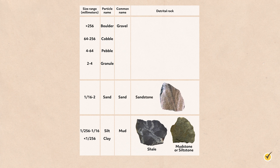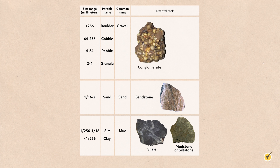Sandstones, which you have probably picked up if you've ever been to a beach, have sand-sized particles that you may be able to see with the naked eye. The third type of sedimentary rock is a conglomerate. Conglomerates are composed of gravel-sized particles that are rounded. If the particles are angular, then they are referred to as breccias. Either way, these rocks are both easily distinguishable to the naked eye.